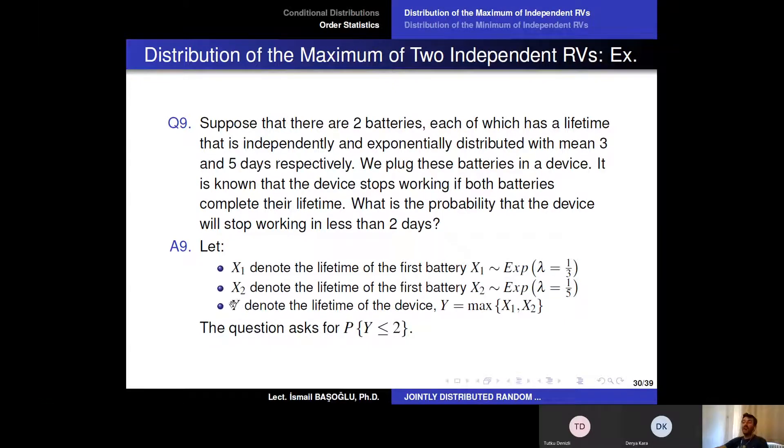So I define the lifetime of device as Y and I know that the device is going to stop when both batteries are exhausted. So therefore the lifetime of the device is equal to the maximum of X1 and X2.